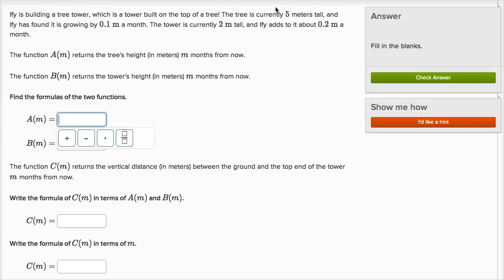So A of m, the tree is currently five meters tall, so it's going to be five meters tall right at the start, and then every month it is growing by 0.1 meters. So it's going to be five plus 0.1 times m. And this m here, this is not meters, this is actually the month.